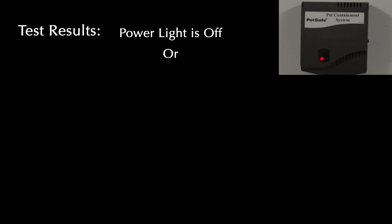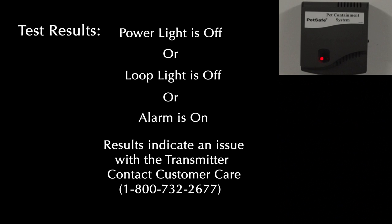If the power light or the loop light indicator light are not both lit on the fence transmitter or the alarm is on, there is a problem with the transmitter and you should contact the customer care center.